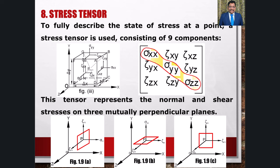The set of nine stress components is called a second-order tensor. This is why the stress tensor is sufficient to specify the state of stress at any point.